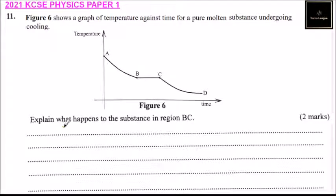Explain what happens to substance in region BC. The reason why there is no change in temperature is because the substance is changing from pure molten to solid. In the course of changing from molten to solid, the energy is used to form molecular bonds.